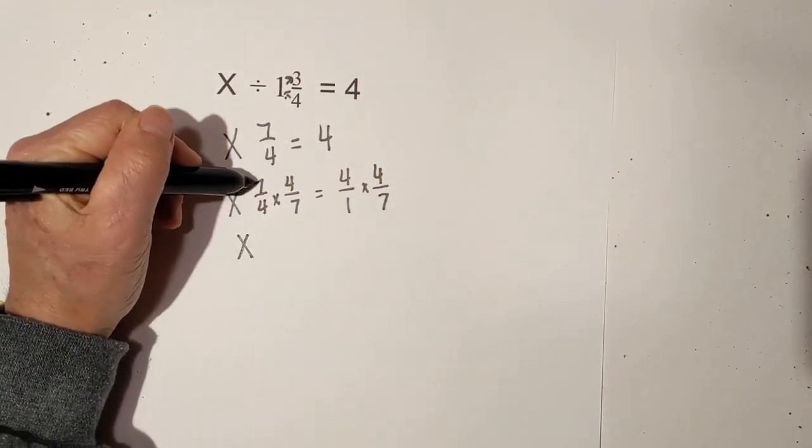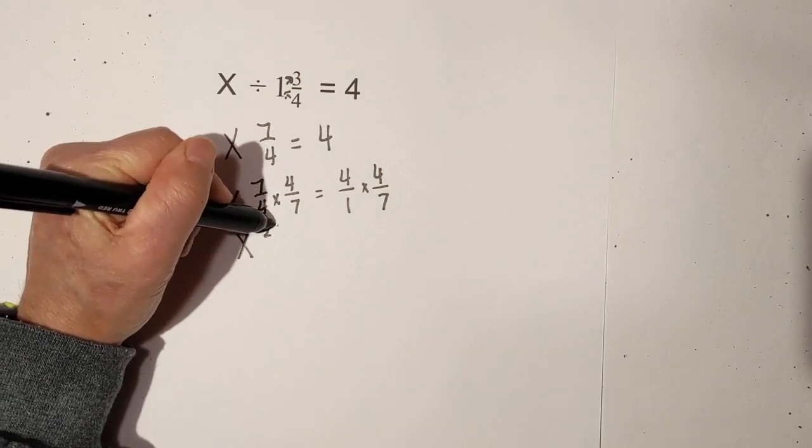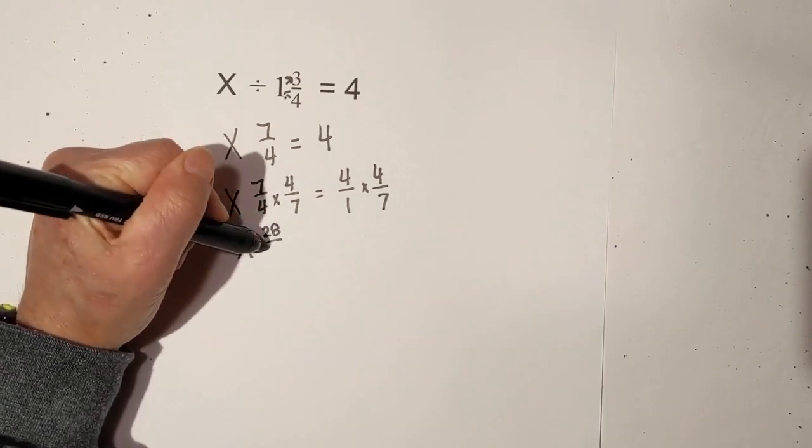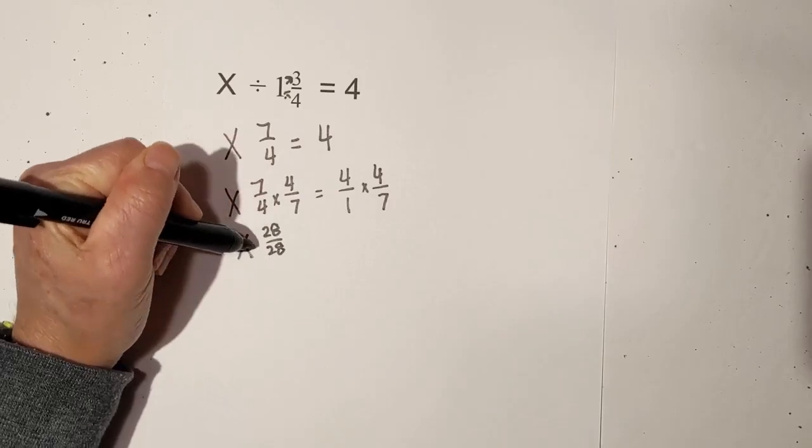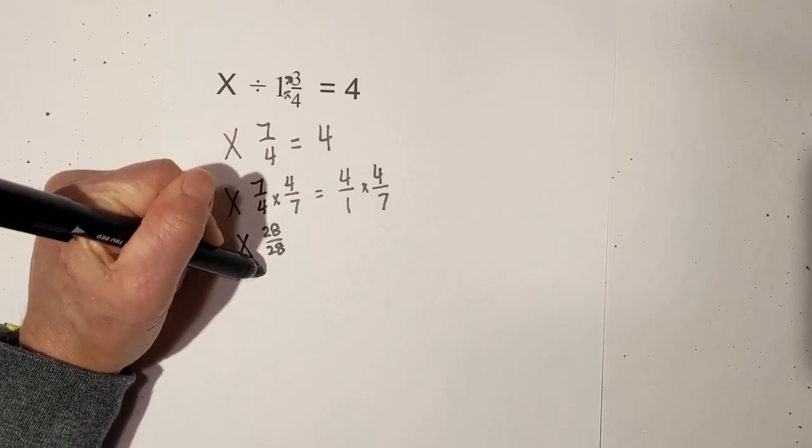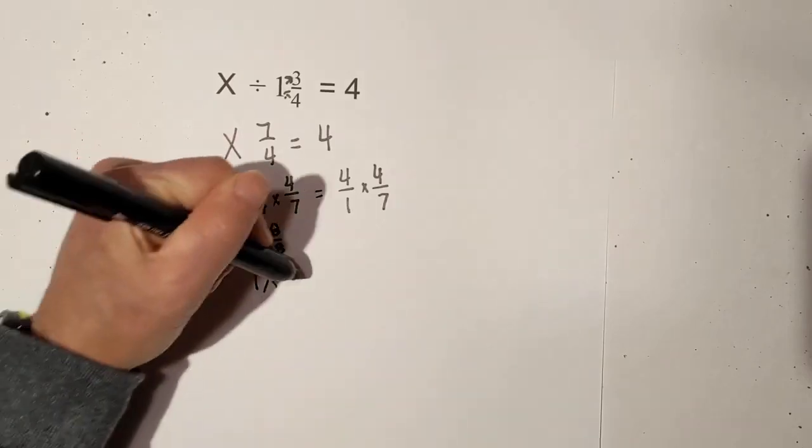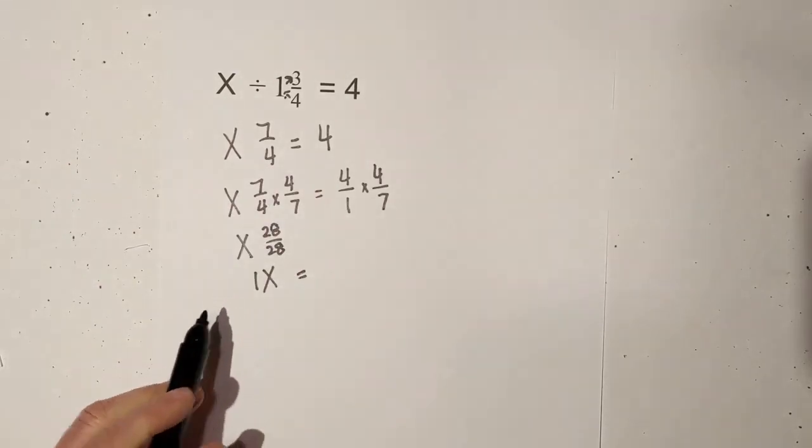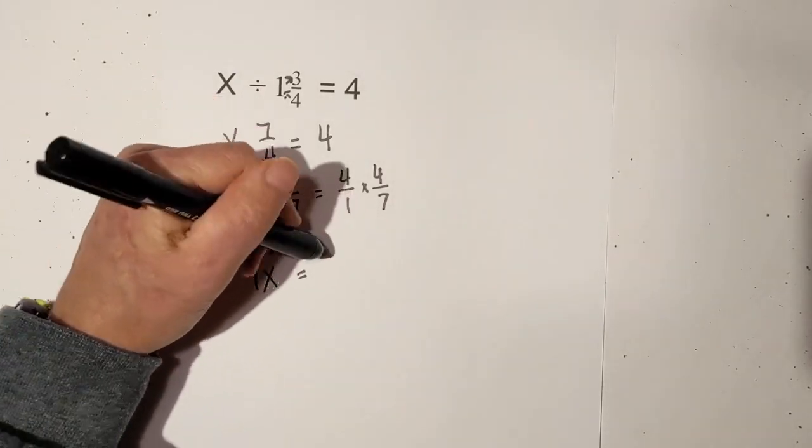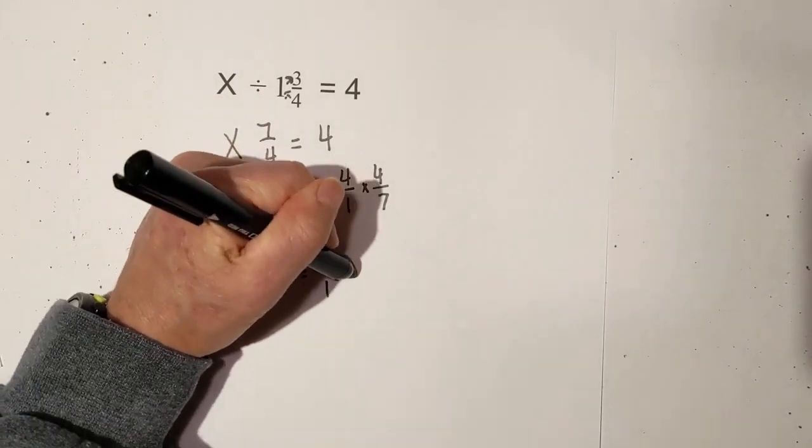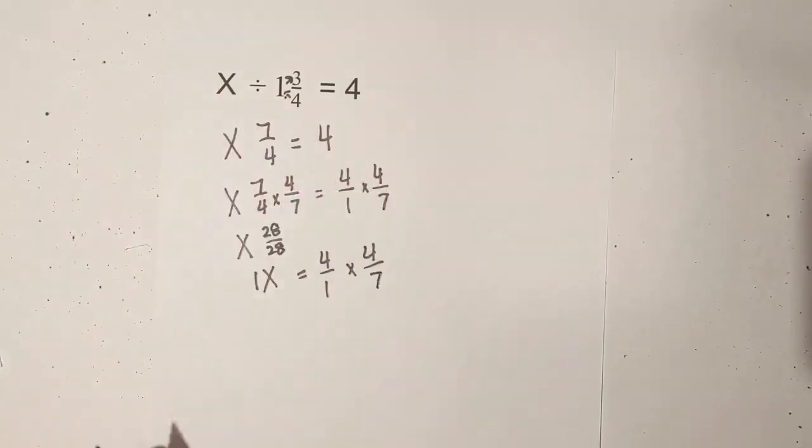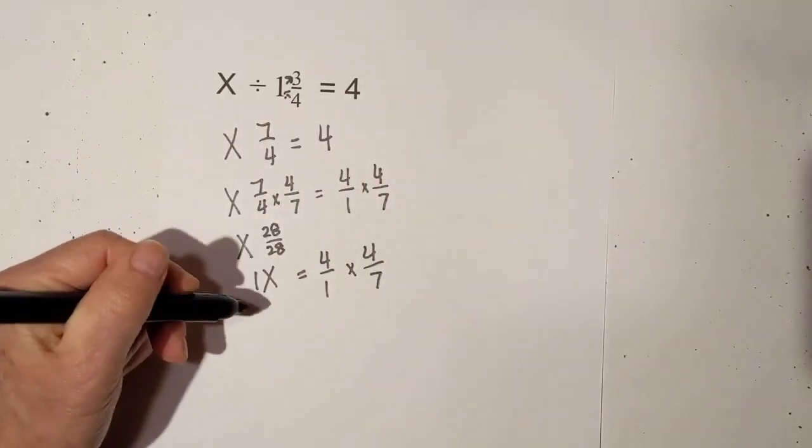Now let me do the math. 7 times 4 is 28, and 7 times 4 is 28. We know that equals 1, so now we have the coefficient of x. We have 1 in front of the x like we would like. Let me move this down so you can understand what we're doing.